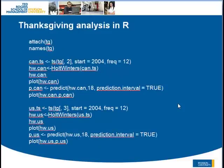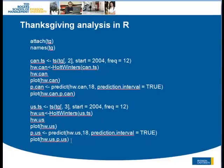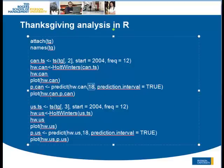Once I did it in SPSS, I also did it in R. The script may look a little complicated, but all you need to do is specify the time series. I define 'can.TS' as a time series starting in 2004 with a frequency of 12. Then I run a Holt-Winters model for Canada, plot it, and predict 18 months ahead. I do the same for the US. It's much faster to do in R than in SPSS.